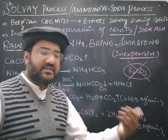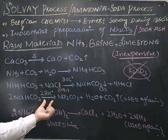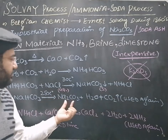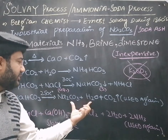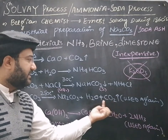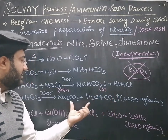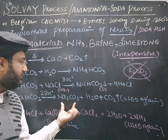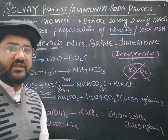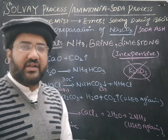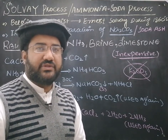Once the precipitates are separated, they are heated at 250 degrees C and decompose to form sodium carbonate and CO2 gas. This CO2 gas is reused, and pure sodium carbonate is obtained from its aqueous solution using the evaporation technique — the water is evaporated and pure sodium carbonate is produced.